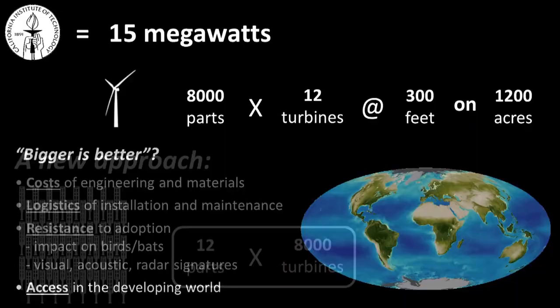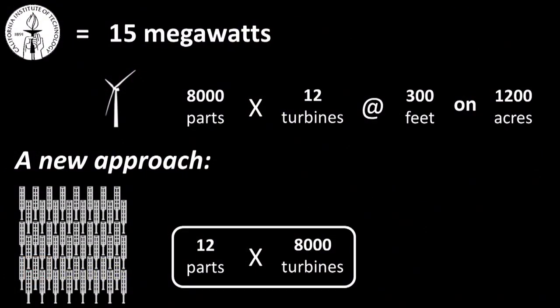For this reason, we decided to turn the problem on its head, and flipped that initial equation with the idea of simpler and smaller vertical axis wind turbines that would be used in very large numbers. As you can see in our example here, the total number of components you're manufacturing doesn't change. But since we're only manufacturing about 12 different parts, we can take advantage of mass production, even for small energy projects.